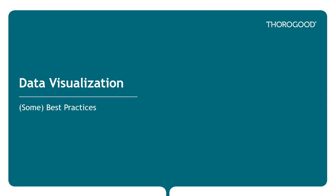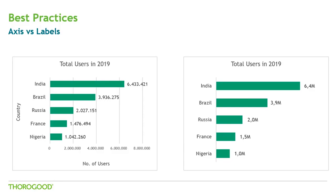Let's apply these principles and get into some tips and best practices of data visualization. One important thing to understand is the function of axes and labels — they both exist to give a number value to data points of different sizes. In this case we're using bar charts. The point is, if they both serve the same purpose, you only need one of them. In the chart on the right we've made a few improvements: one, we've removed the x-axis because we're keeping the labels instead.